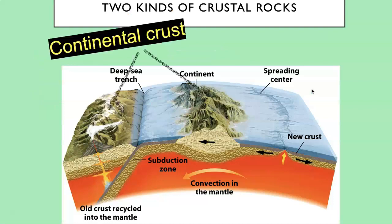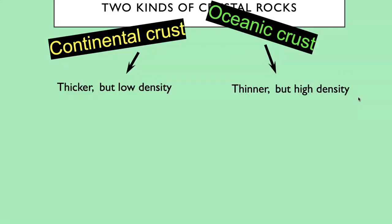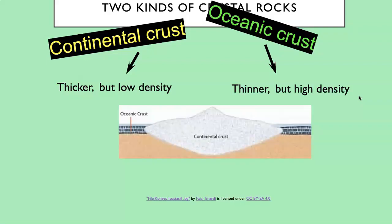Let's take a closer look at the crust. There are two kinds of crustal rocks: continental crust, depicted in this cartoon as mountains or islands above sea level, and ocean crust, which we don't really see because it's covered by ocean water. The continental crust is thicker but lower in density, while the ocean crust is thinner but higher in density — and those differences are due to the types of rocks they're made of.